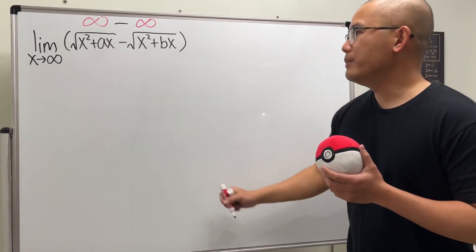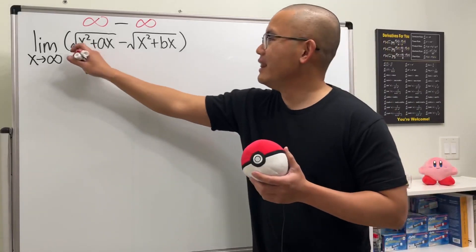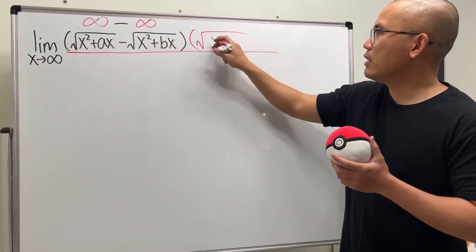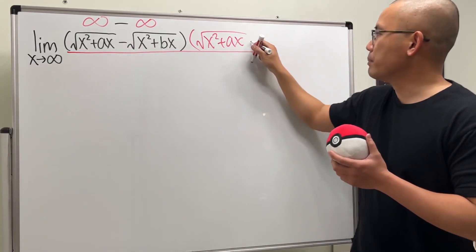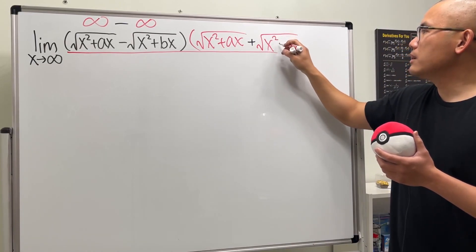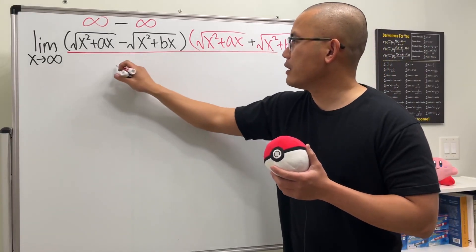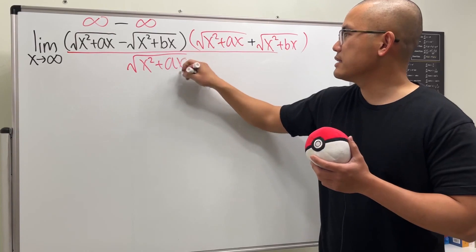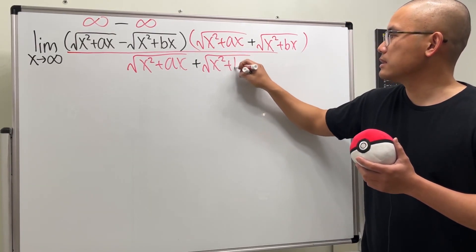Well, we have square root so let's go ahead and just use the conjugate. Let's multiply the top and bottom by square root of x squared plus ax and change the minus to a plus, and then we have the other square root which is x squared plus bx. And of course we divide the same thing here, so we have square root of x squared plus ax and then plus square root of x squared plus bx.